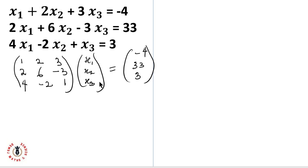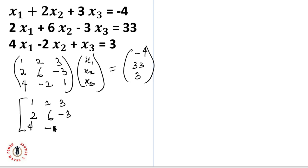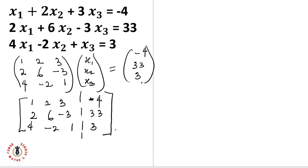The next thing is to create my augmented matrix. I'll have 1, 2, 3 as my first row; 2, 6, minus 3 as my second row; and 4, minus 2, and 1. Then I'll bring in the constants to form another column — it must be 3, and here is 3. So now I have my augmented matrix.